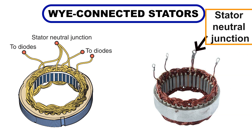Additionally, the neutral junction in a Y stator can be used for special functions, like controlling the charge indicator light or regulating the rotor field current.